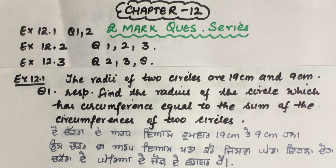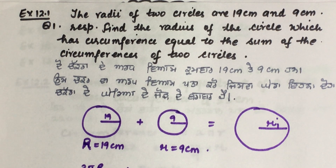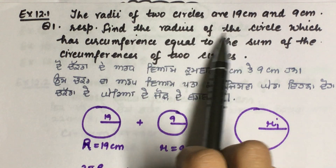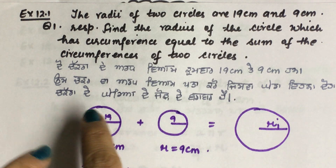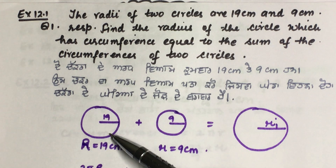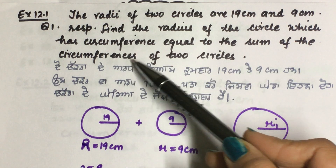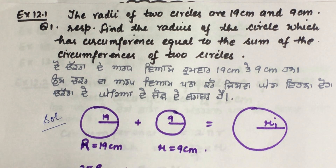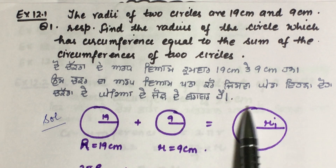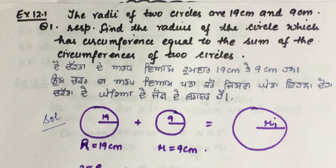Let's begin Exercise 12.1, first question. Two circles are given — one circle has radius 19 cm, the second has radius 9 cm. We have to find the radius of a circle whose circumference is equal to the sum of the circumferences of the two given circles. So the circumference of the two circles added together gives us the circumference of the new circle, and from that we find the radius.